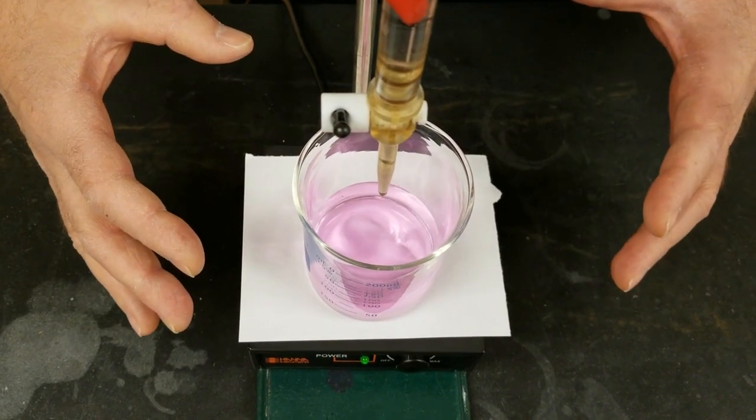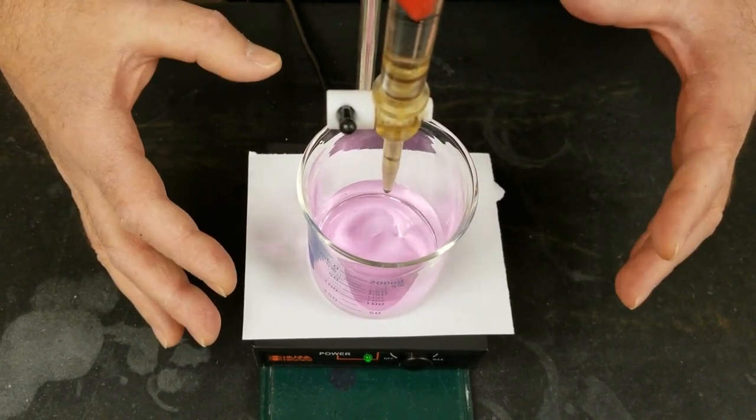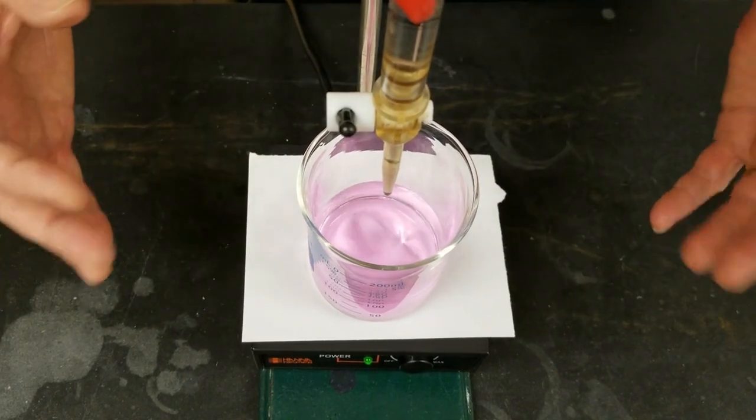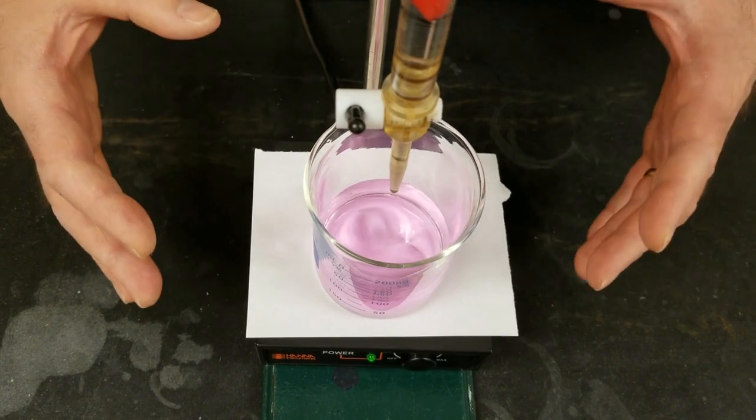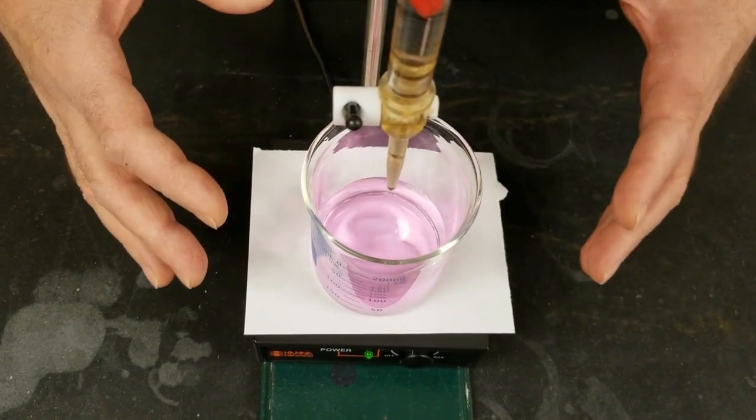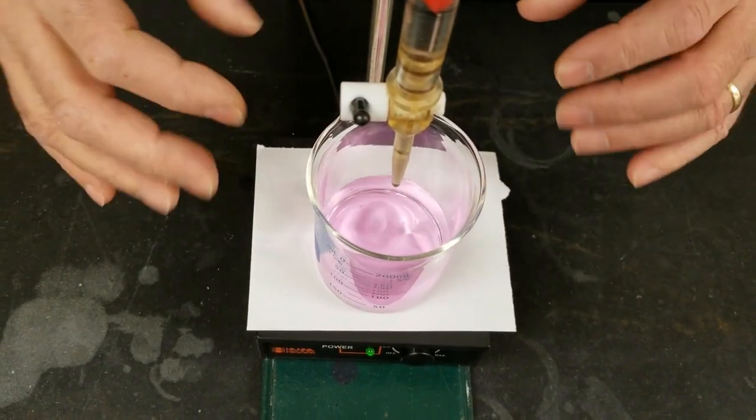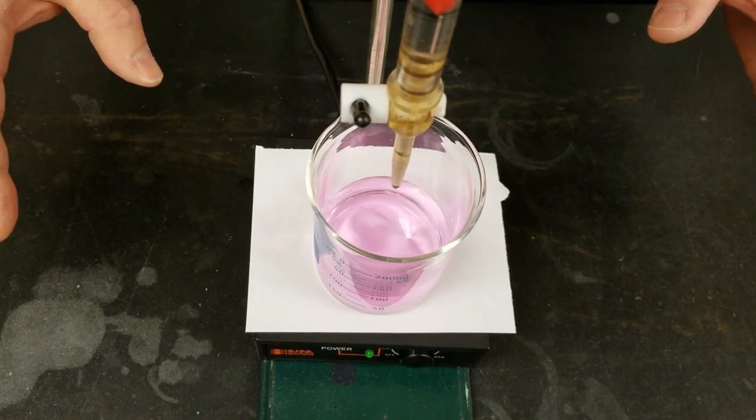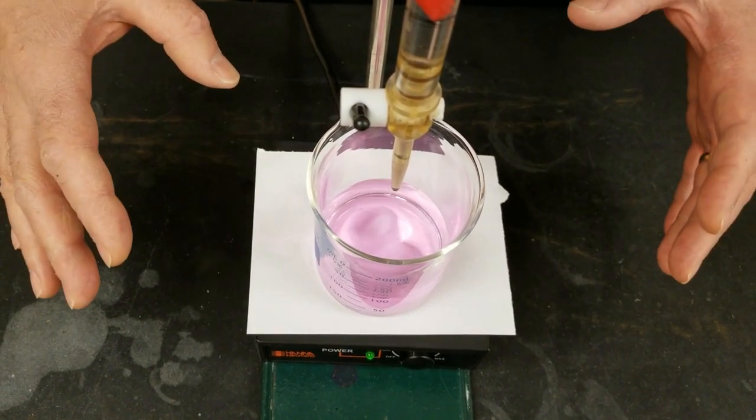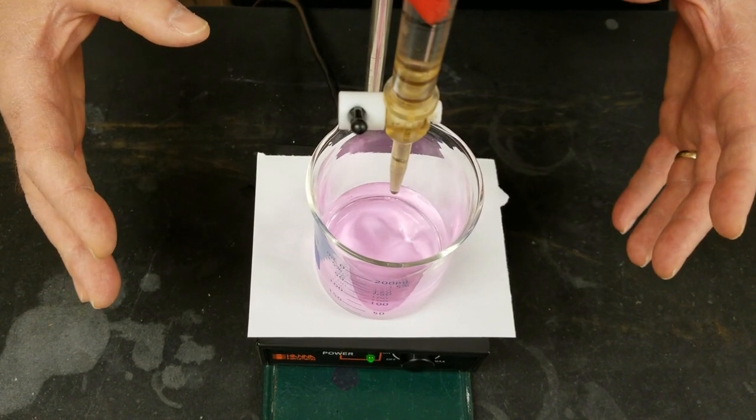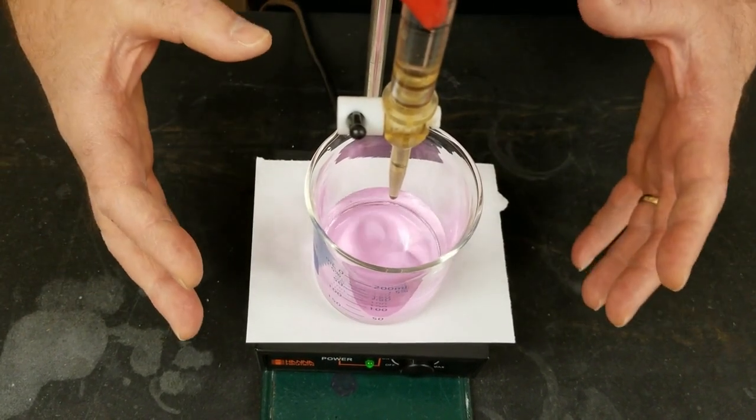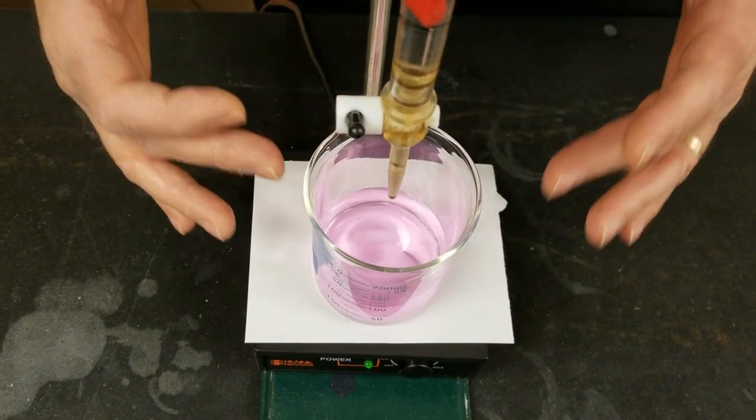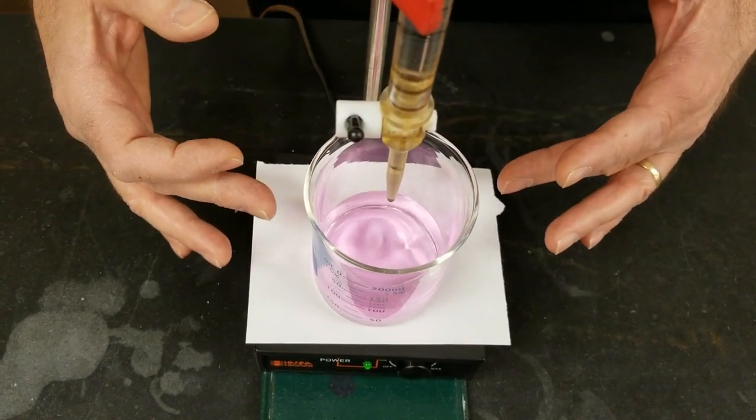So when you add OH- to this beaker, that OH- goes after the strongest acid if it's available. So the KHP being stronger reacts with the OH- first. When the KHP is all gone, the only thing left in there is the weaker PPN, very weak acid. And so what we can see here is that this is now the end point of the titration.